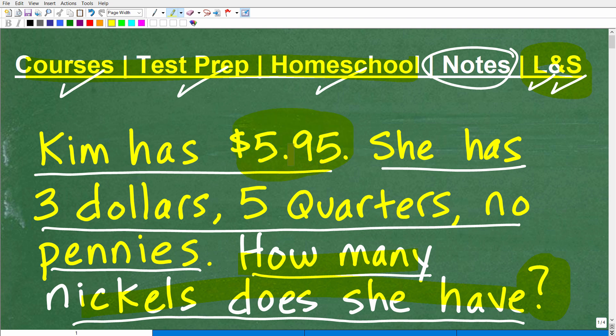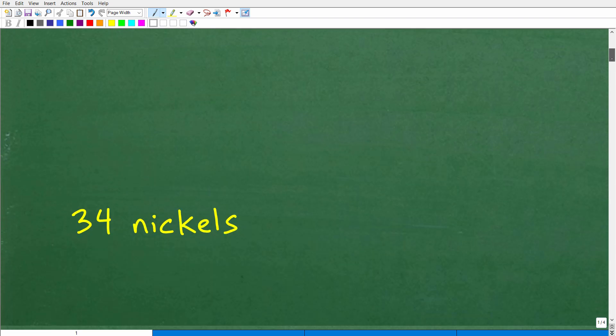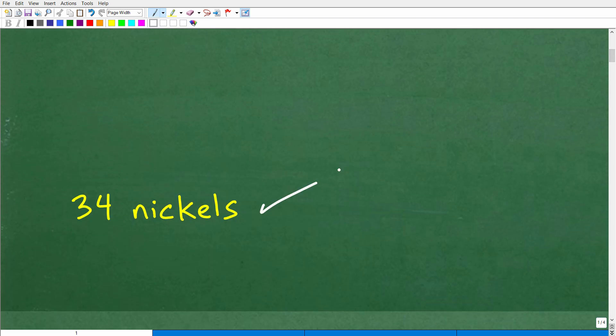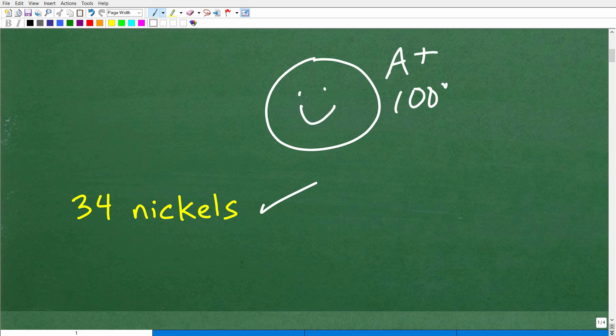Okay, and she has this $5.95 made up of these dollars and quarters and she has no pennies, but she has some nickels. And we want to know how many nickels does she have? Well, here is the answer. She has 34 nickels. All right, so how did you do? Hopefully you figured this out. And if that is the case, let me give you a nice little happy face, an A+, a 100%, and a few stars so you can celebrate your success doing a math word problem today. Nice job.